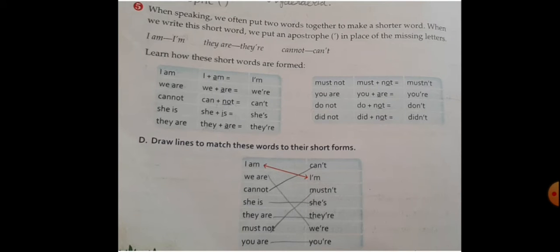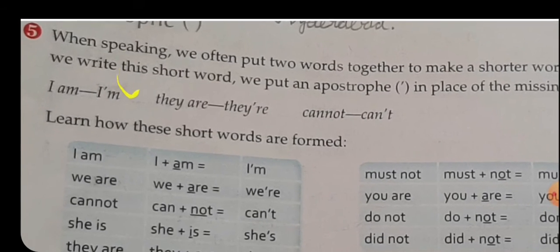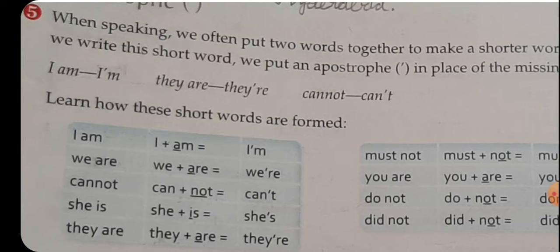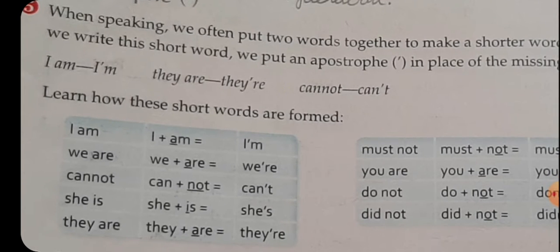Number five: Apostrophe. When speaking, we often put two words together to make shorter words. When we write this short word, we put an apostrophe in place of the missing letters. Short form बनाने के लिए, जो letter cut किया है — जो letter missing है — उसकी जगह पर apostrophe लगाना है। For example: I am → I'm (a की जगह apostrophe), they are → they're (a की जगह apostrophe), cannot → can't (n और o की जगह apostrophe)।